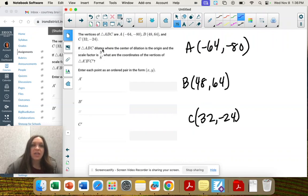So it dilates where the center of the dilation is the origin. That means that we can just multiply by the scale factor to get the coordinates of the dilated version. So we're going to multiply everything by 3 8ths.